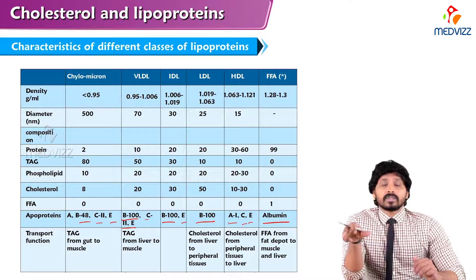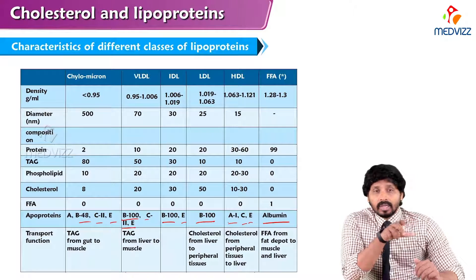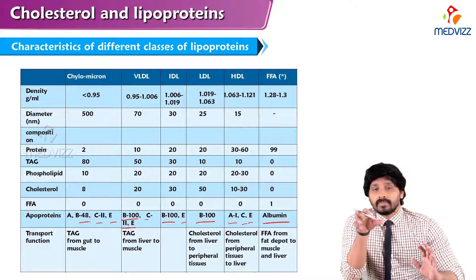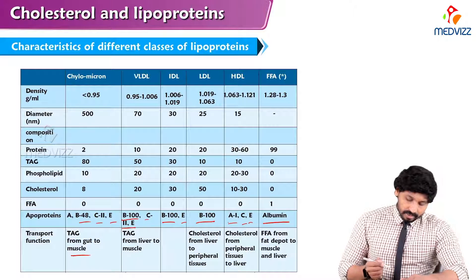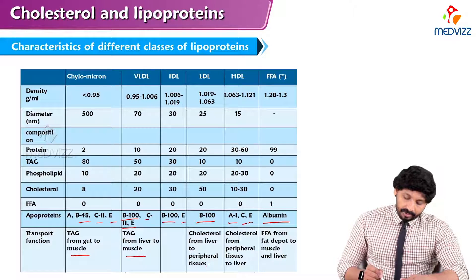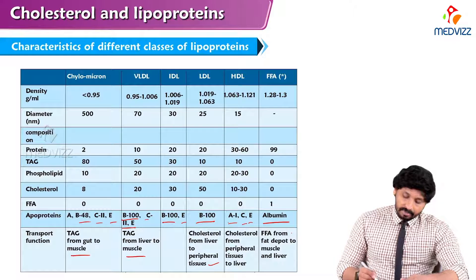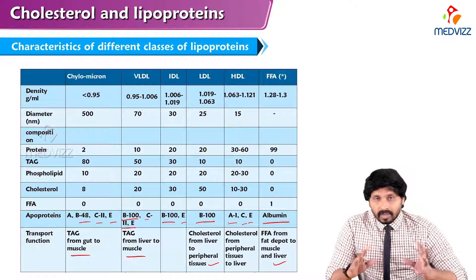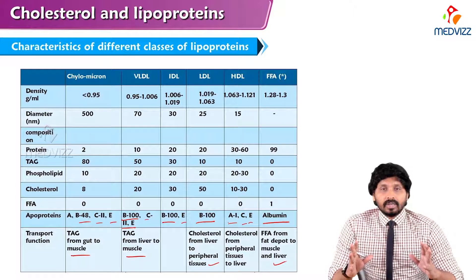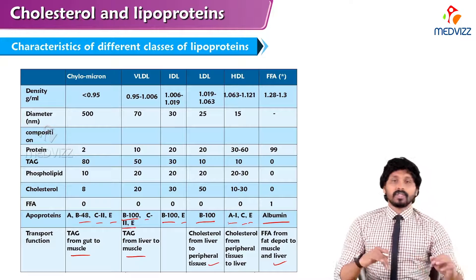The type of apoproteins they carry has great importance, because deficiency of these proteins results in lipoprotein deficiency and loss of function. The functional summary: chylomicrons transport TAG from gut to muscle; VLDL transports TAG from liver to muscle; LDL transports cholesterol from liver to peripheral tissues; HDL transports cholesterol from peripheral tissues to liver; and free fatty acids travel from fat depots to muscle and liver.